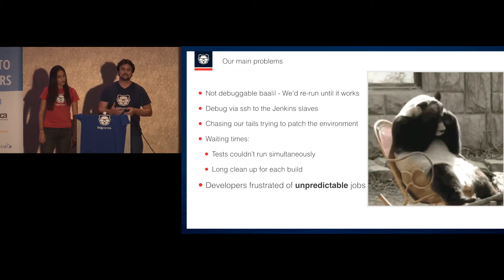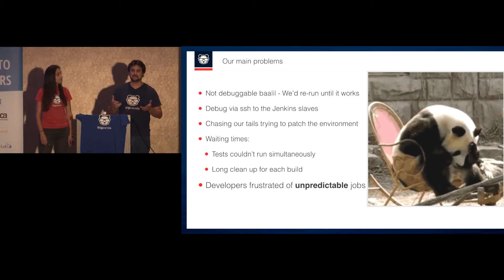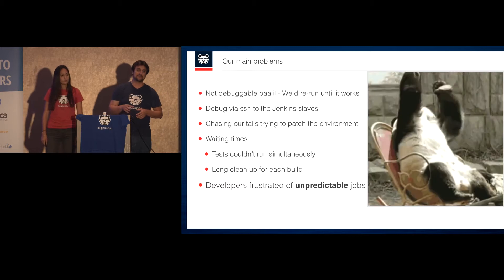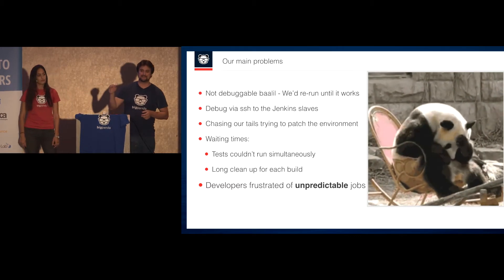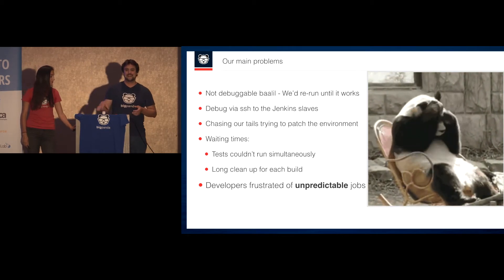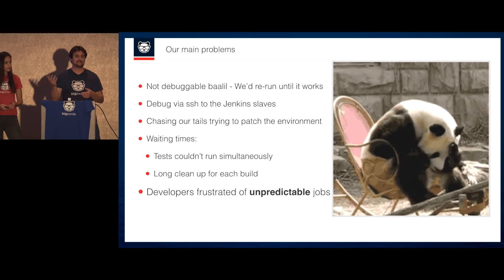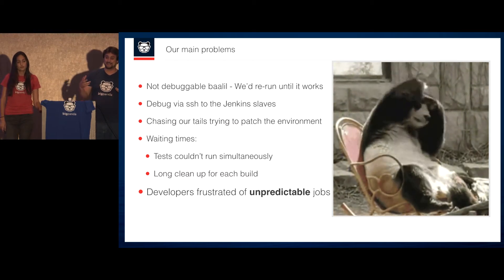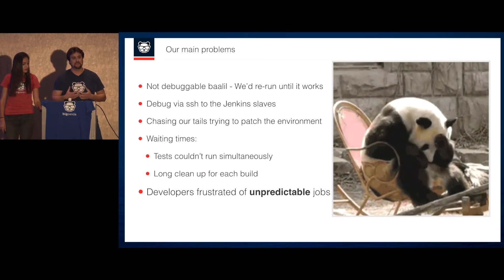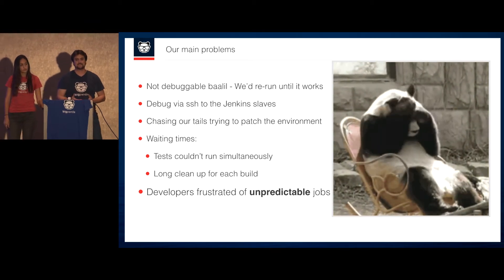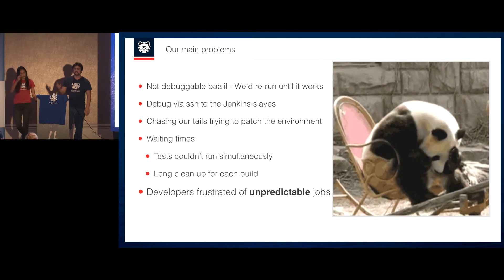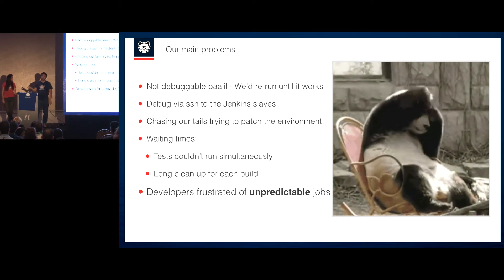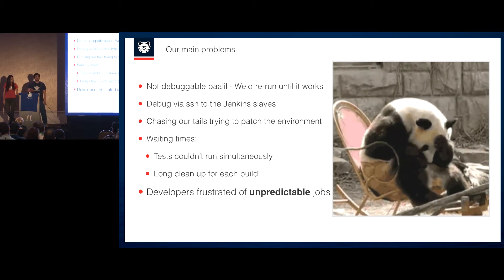We really suffered from waiting times — we could wait up to 45 minutes just to get a build, both because of the locking per service and all the setup we had. In the beginning of each build we had so many things running to keep everything clean, and at the end we had cleanup steps to give the next test some chance to actually succeed. But the main problem was that developers were frustrated. It was unpredictable, not stable. Whenever pushing code, they couldn't be certain whether failing tests meant they shouldn't push to production.